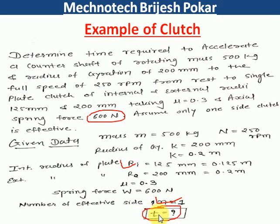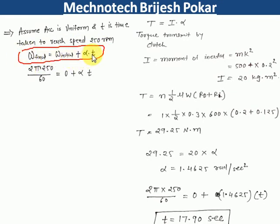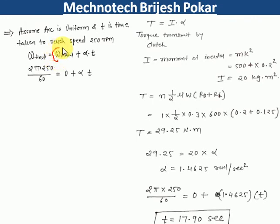We need to find the time for the shaft to rotate from 0 rpm to 250 rpm. To do this, we use the angular velocity equation: ω_final = ω_initial + α·t, where ω = 2πN/60. The final rpm is 250 and initial ω is 0, so ω_final = α·t. We need to find α first before solving for t.